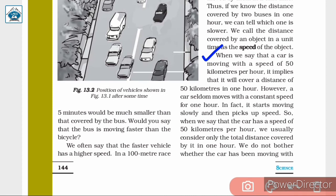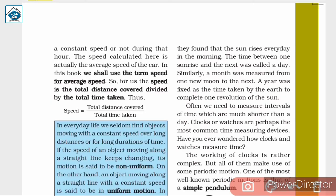When we say that a car is moving with a speed of 50 km per hour, it implies it will cover a distance of 50 km in one hour. However, a car seldom moves with a constant speed for one hour — it starts moving slowly and then picks up speed. The speed we consider here is actually the total distance covered divided by the total time taken, which is the average speed. So, speed equals total distance covered divided by total time taken.